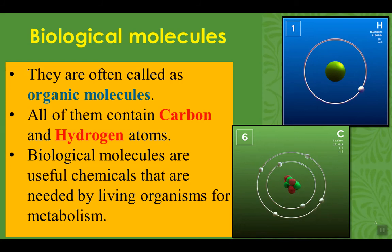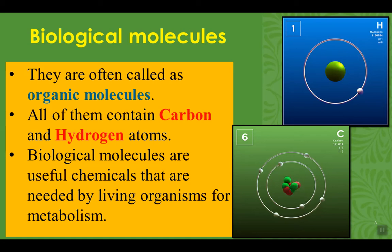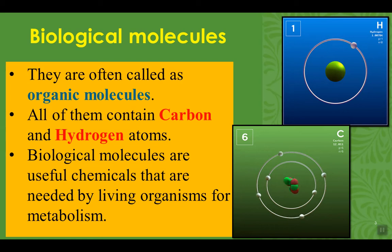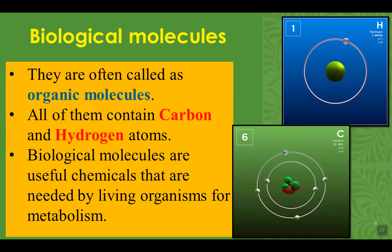Biological Molecules. Are you wondering what makes you come to life? There are few important chemicals made out of carbon, hydrogen, and oxygen mainly, that are known as organic molecules. Some people call them macromolecules. There are four different types of biological molecules: carbohydrates, lipids, proteins and nucleic acid.